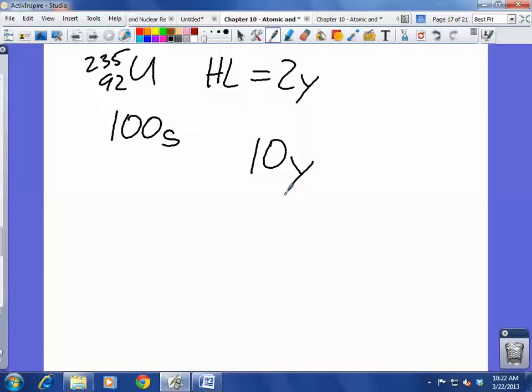We can do that. Now, there's no way for us to jump from two years to ten years. The only thing I can do is I can say, well, let's do it one step at a time. So, after two years, after one half-life, how much uranium is going to be left? Fifty. Fifty.